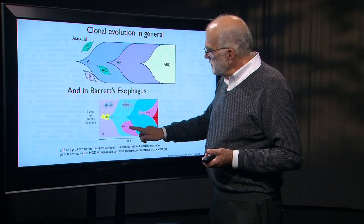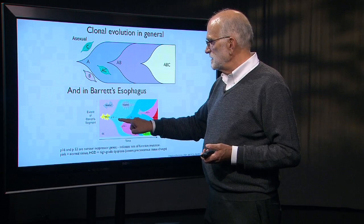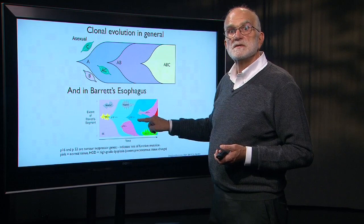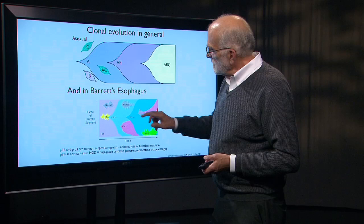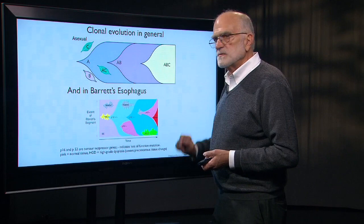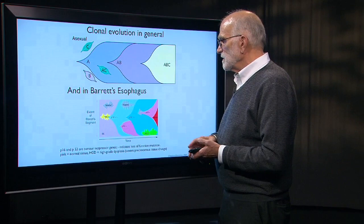A P53 mutation comes along, but in a cell that doesn't have the P16 mutation. Then another cell comes along that has both P16 mutations and takes over. Then along comes a P53 mutation in a cell that's got both P16 mutations, and it takes off and forms a cancer. Exactly this kind of process has been documented as going on in the formation of cancer in Barrett's esophagus.